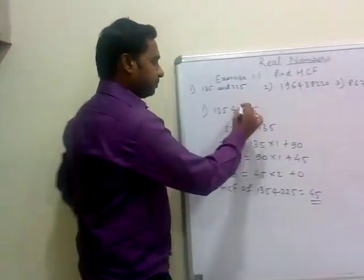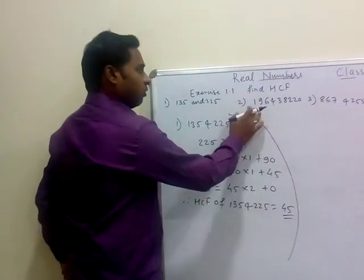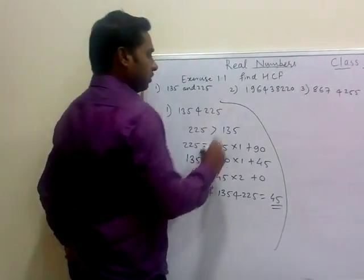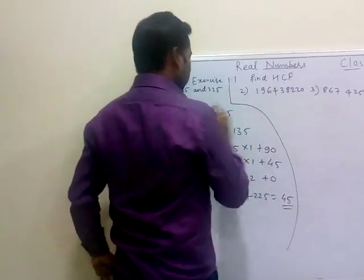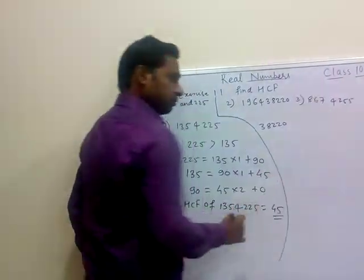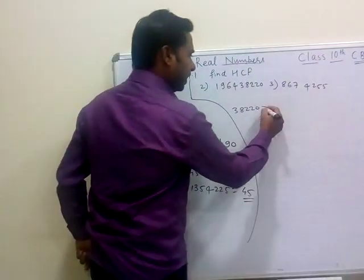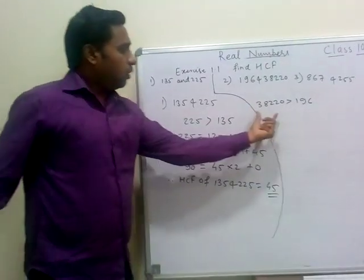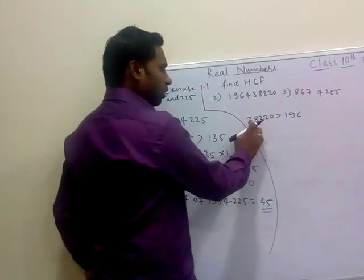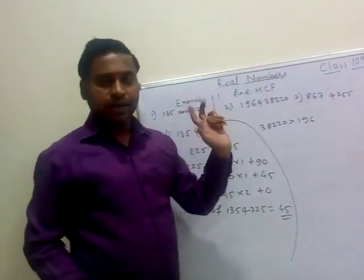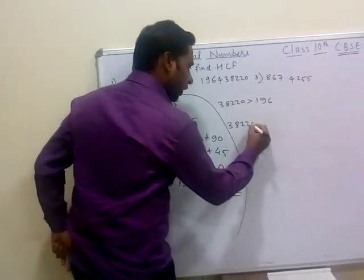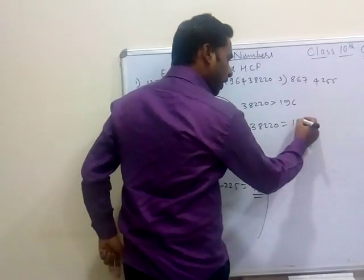Now the second one: 196 and 38,220. Again we compare these two numbers. 38,220 is greater, so it will be our dividend, and 196 will be our divisor. So here 38,220 = 196 × quotient. We need to calculate how many times 196 goes into 38,220.